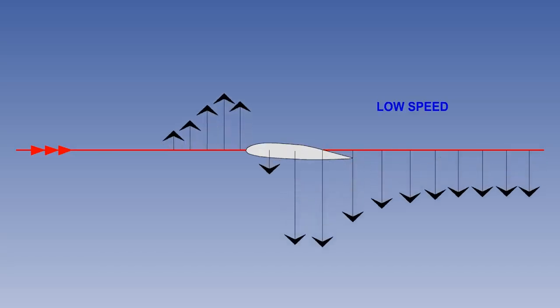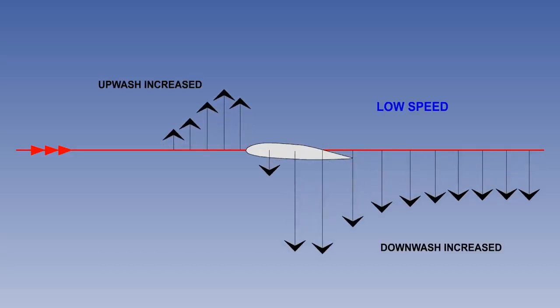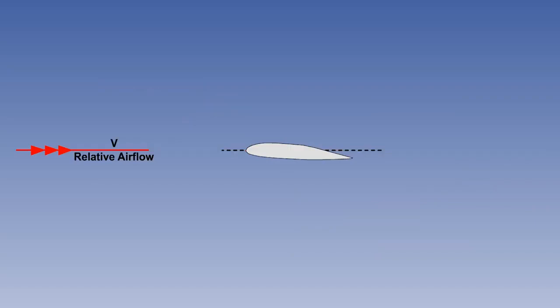As the vortices increase in strength with increased angle of attack at lower speeds, there is further reduction in the effective angle of attack. Because of this local reduction in effective angle of attack, the overall lift generated by a wing will be below that which would be generated if there were no spanwise pressure differential.